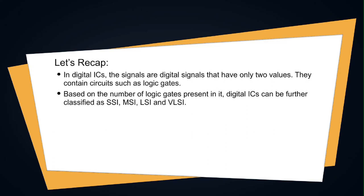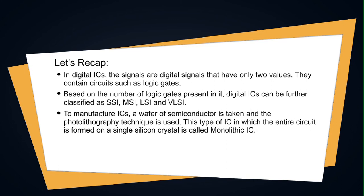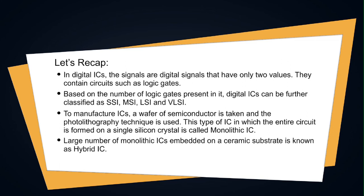To manufacture ICs, a wafer of semiconductor is taken and the photolithography technique is used. The type of IC in which the entire circuit is formed on a single silicon crystal is called a monolithic IC. A large number of monolithic ICs embedded on a ceramic substrate is known as a hybrid IC.